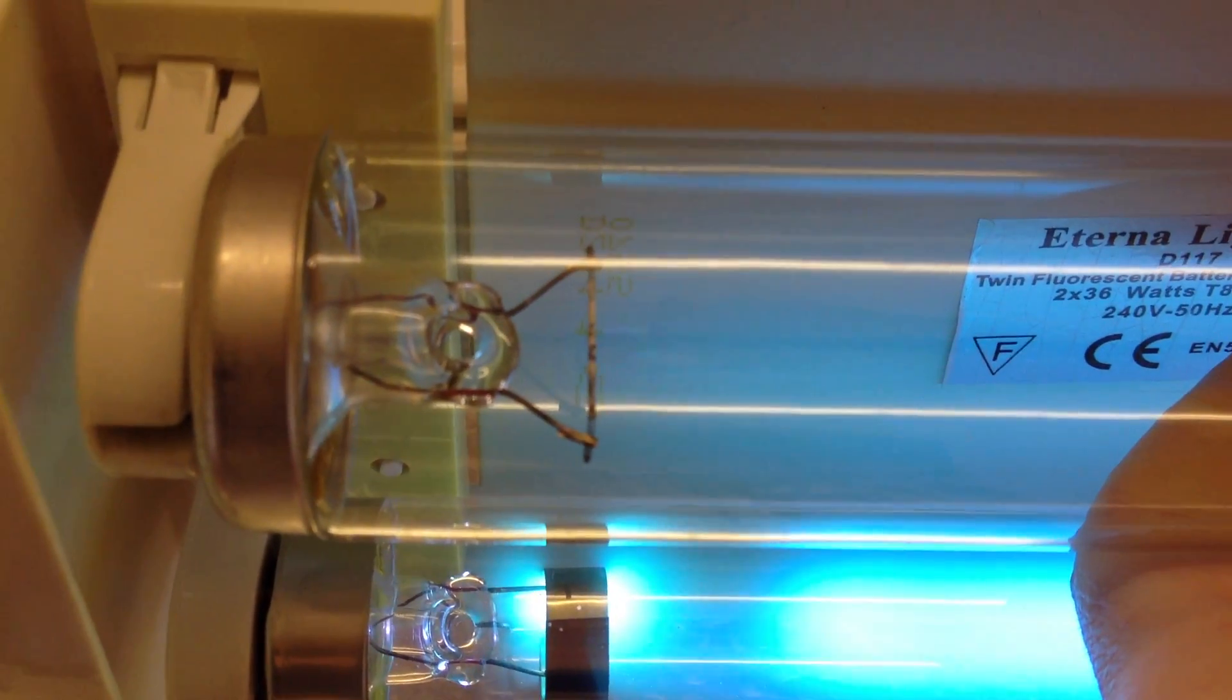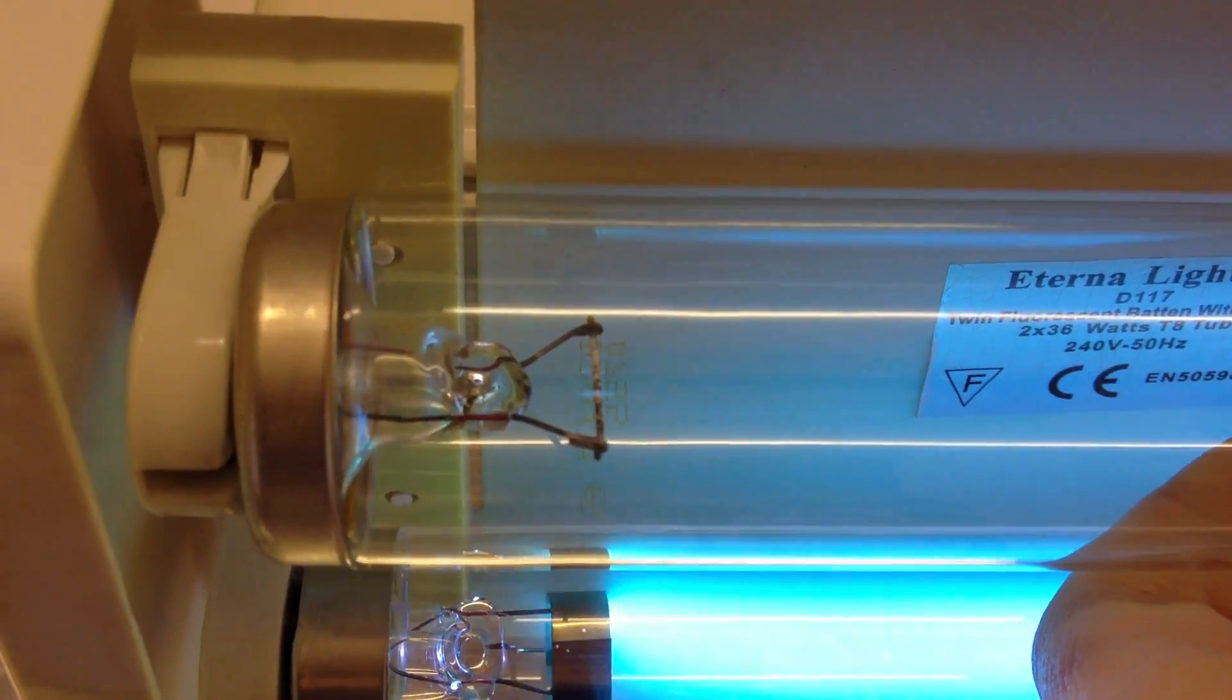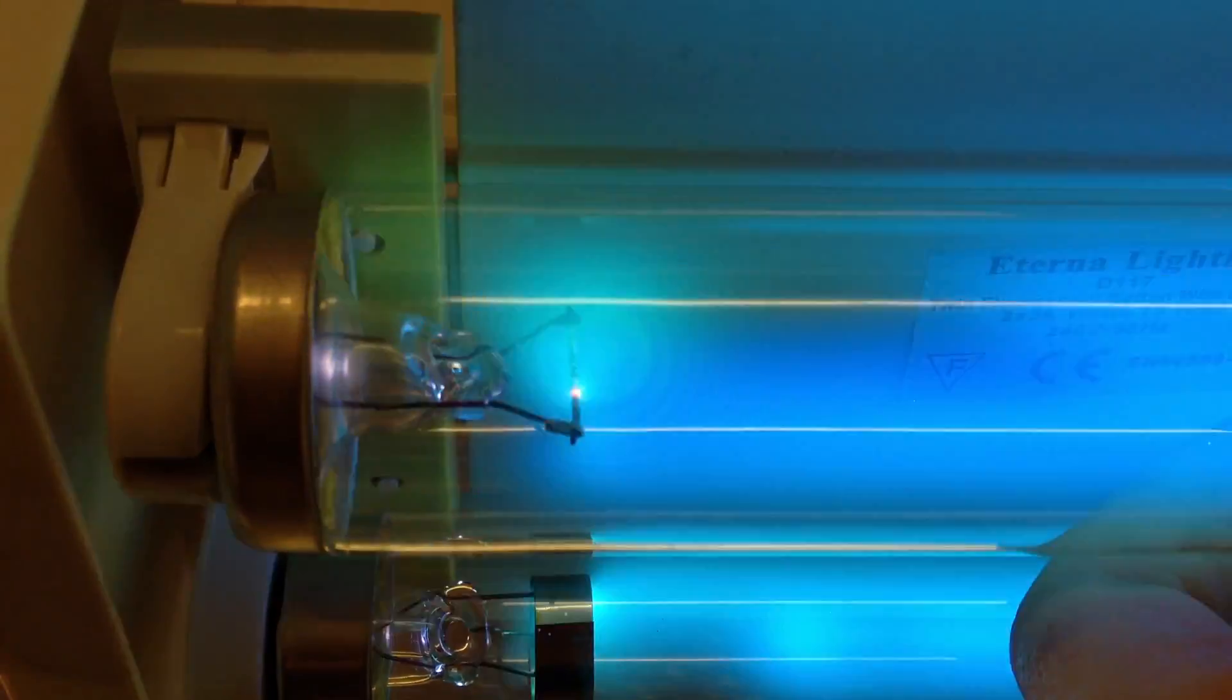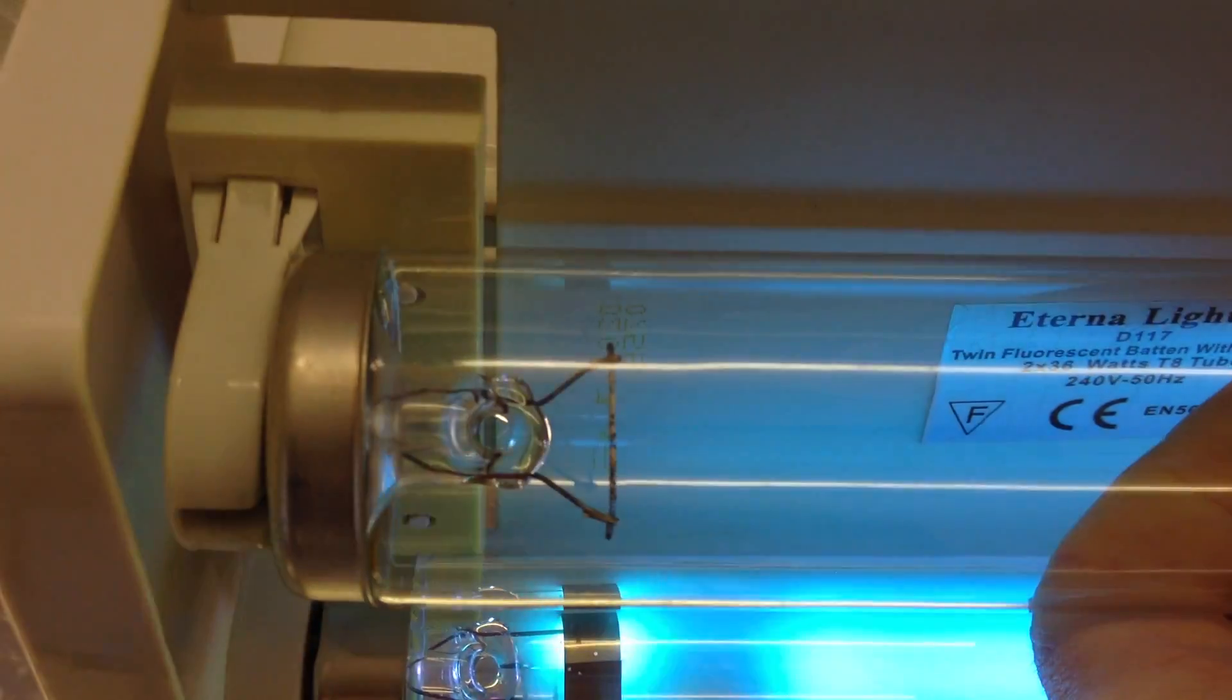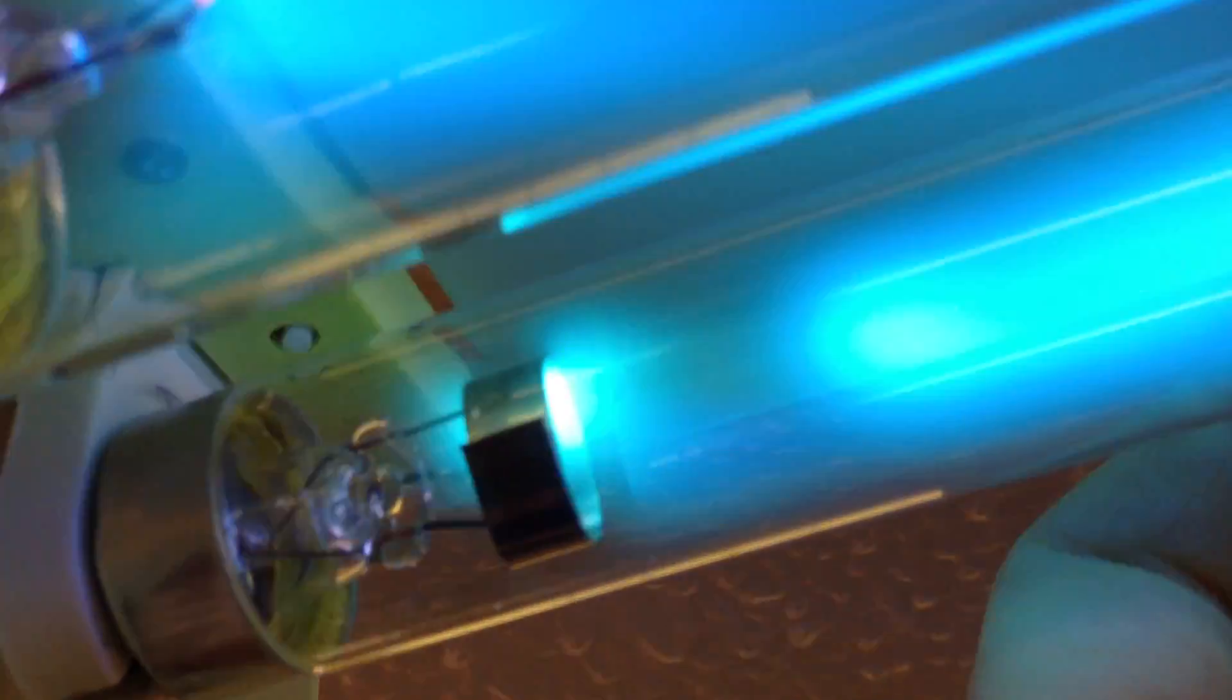Now watch for the blue bit that comes on one of the cathode legs while the starter's closing. The typical didn't do it this time. Oh there we are.